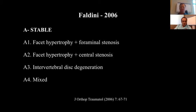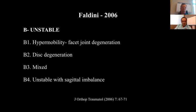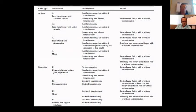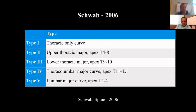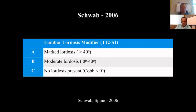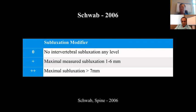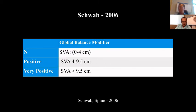Another classification system was described by Faldini, with stable and unstable adult degenerative scoliosis, and they recommend some surgical techniques. Then in the same year, Schwab described another classification system, dividing adult degenerative scoliosis into five groups. They described the lumbar lordosis modifiers, suplexation modifiers, and also global sagittal balance modifiers.